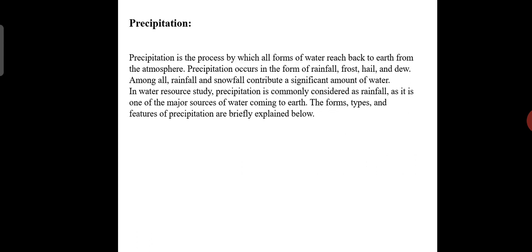Next, we study about precipitation. Precipitation is a process by which all forms of water reach back to Earth from the atmosphere. Precipitation occurs in the form of rainfall, frost, hail, and dew. Among all, rainfall and snowfall contribute a significant amount of water.